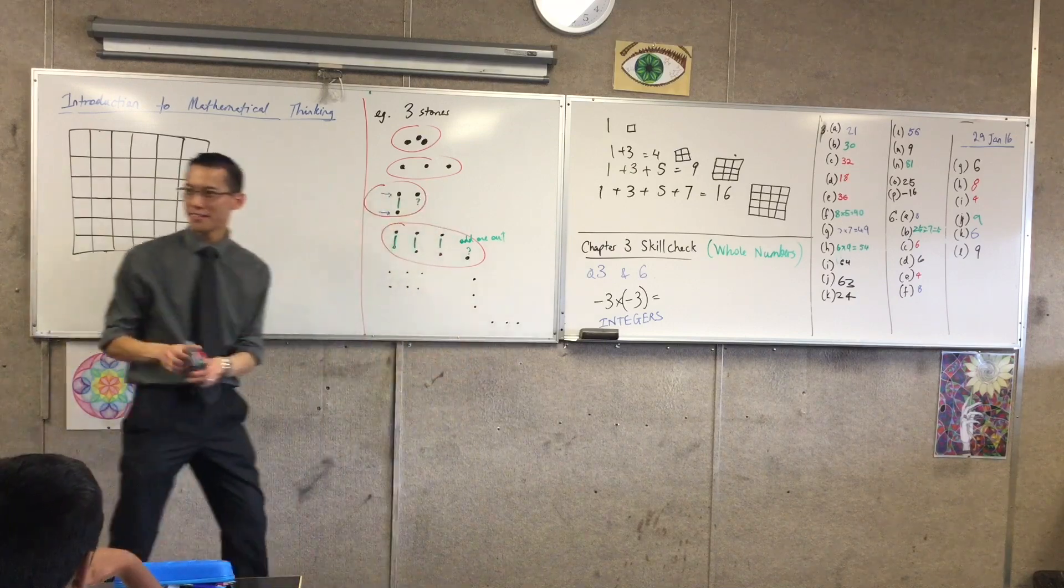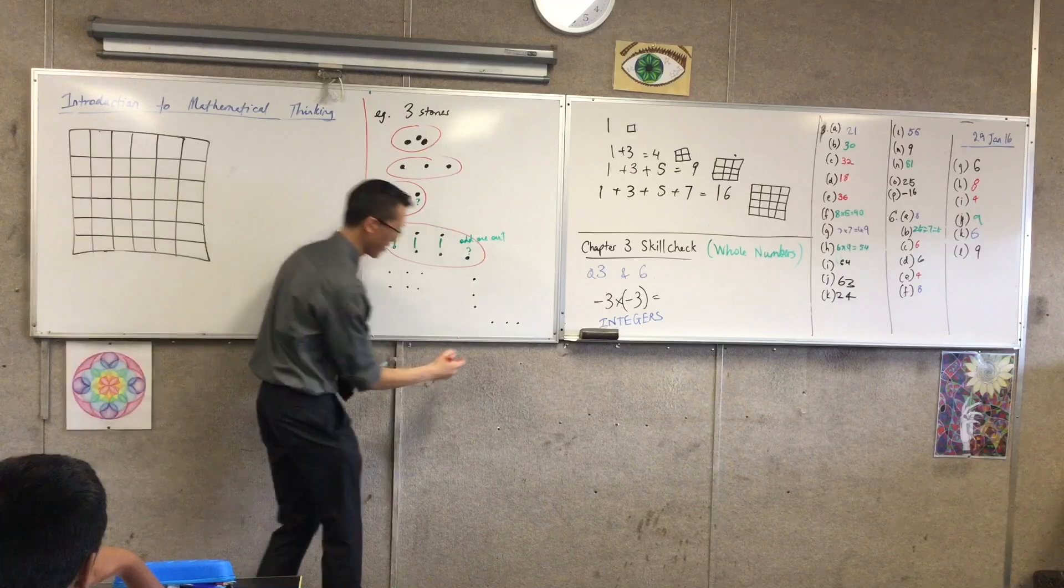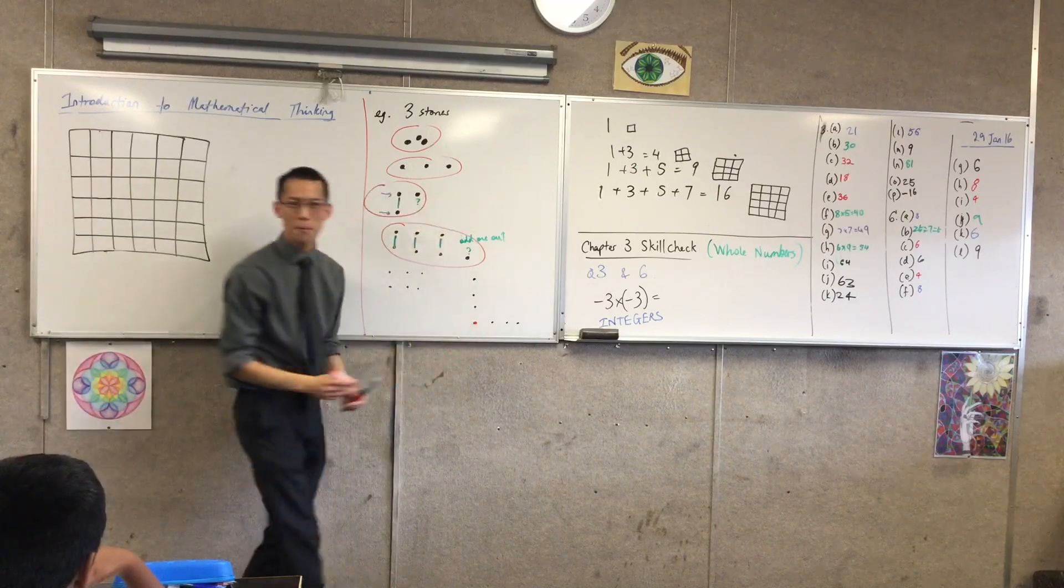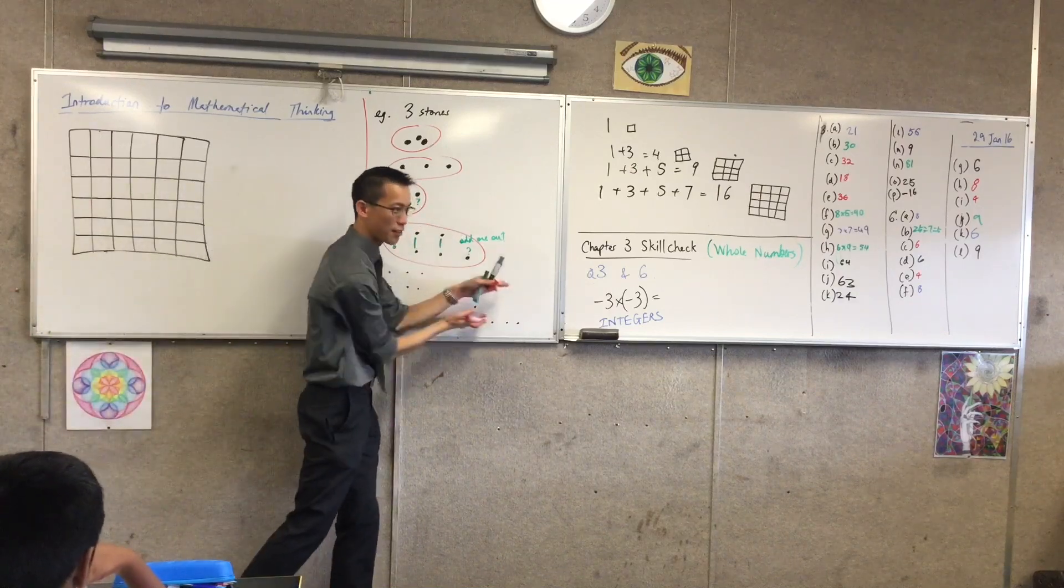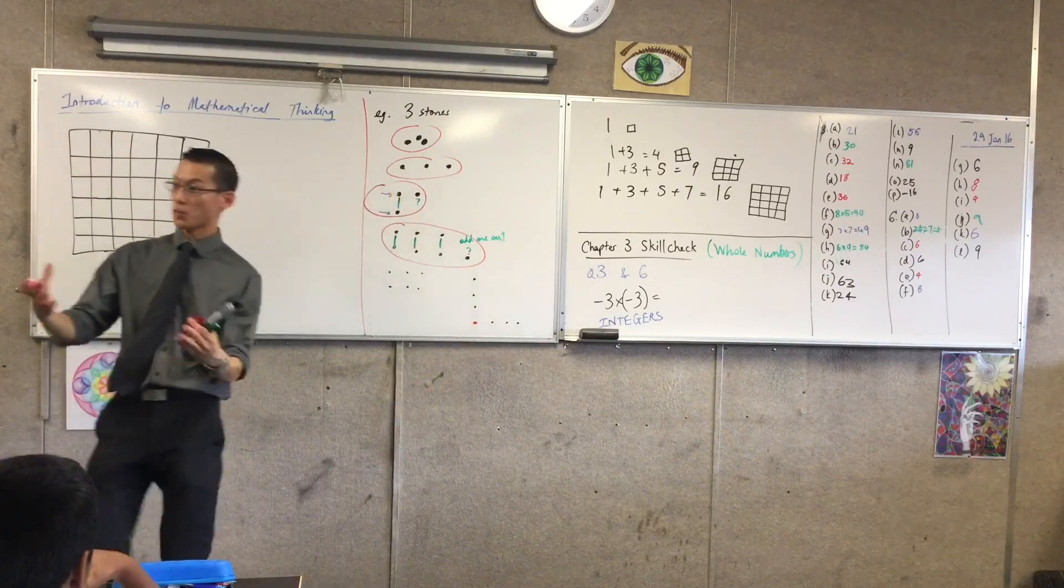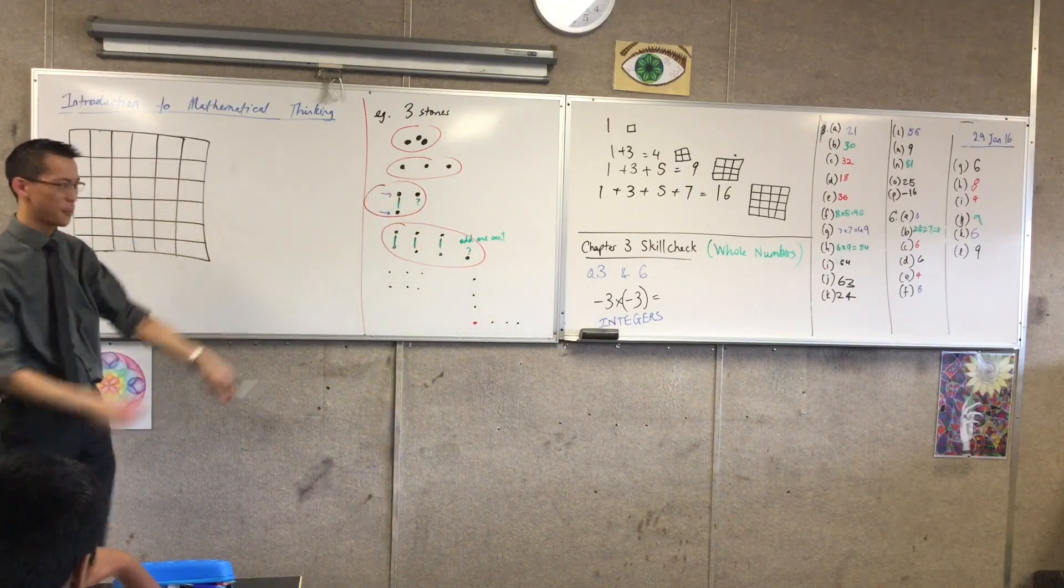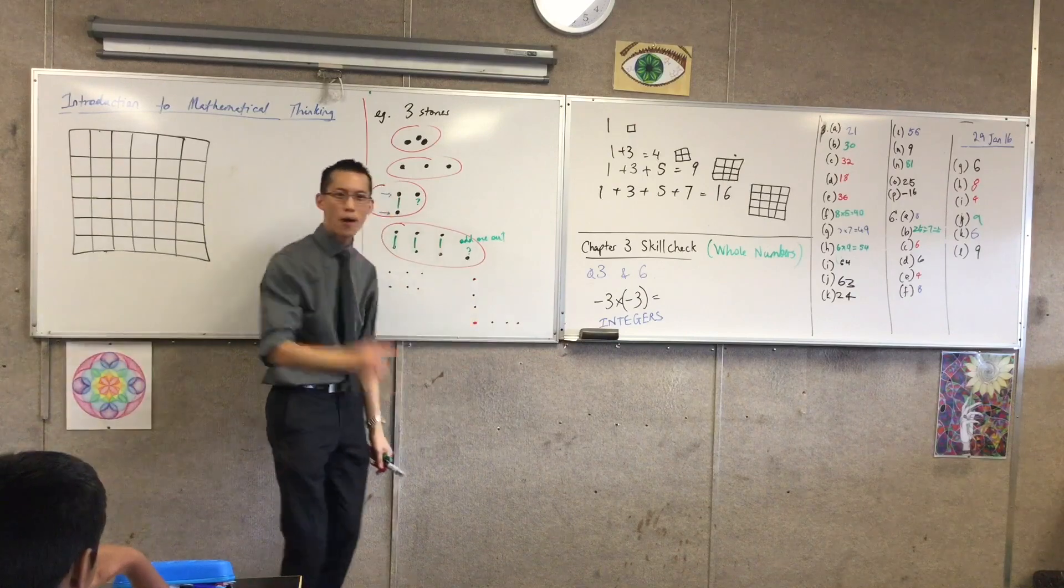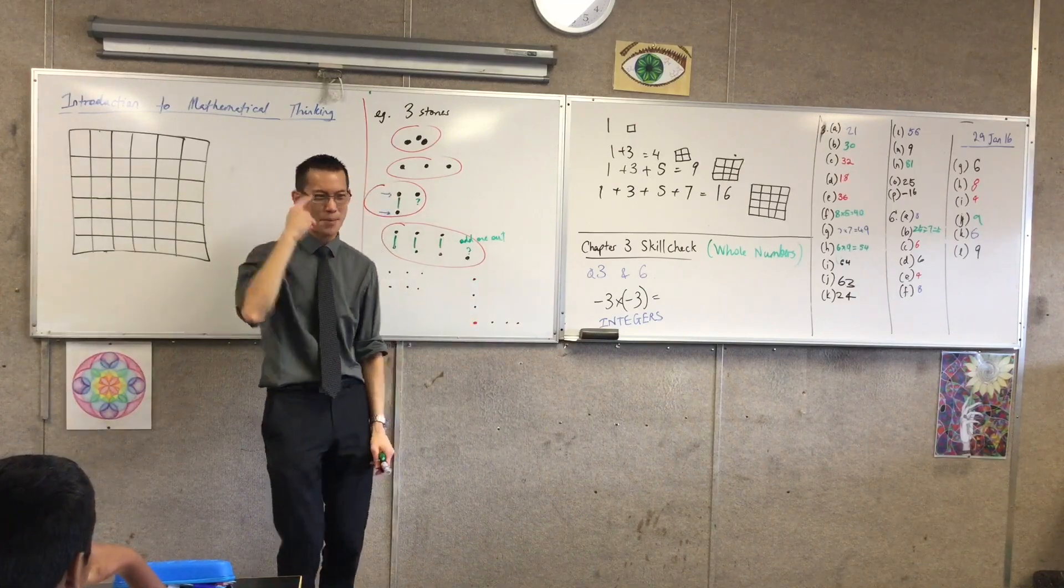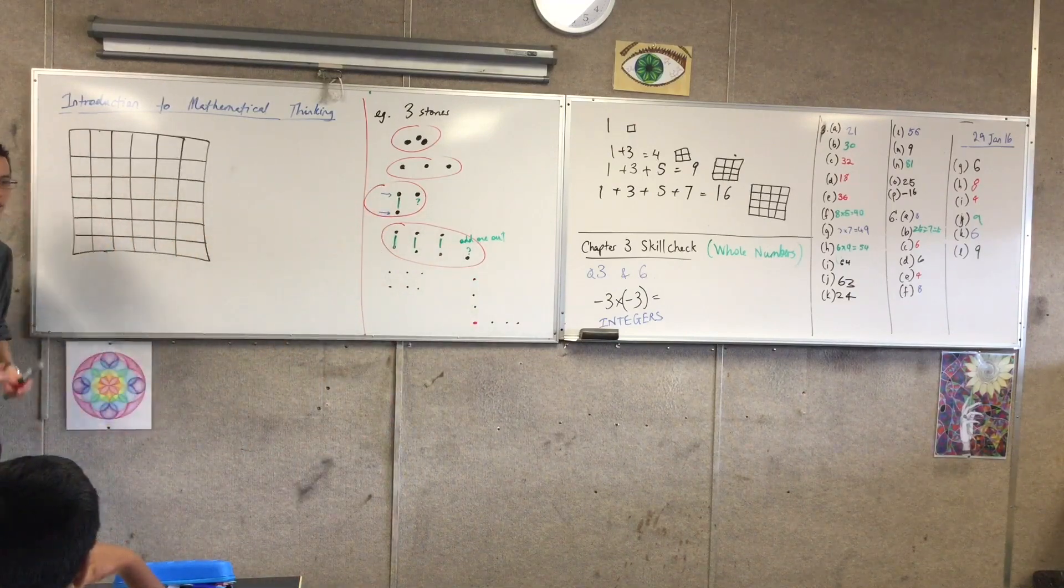You remember that odd one out that we said, oh that looks a bit funny there? The odd one out is what makes the two arms of this kind of junction here, this L. It makes it work. The odd one out is needed, otherwise you don't get the shape. I wonder if anyone's cogs are turning up here and seeing what we can do with this thing.